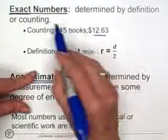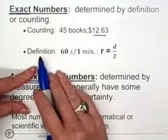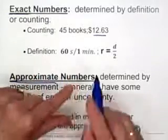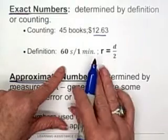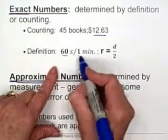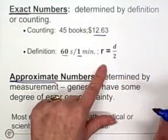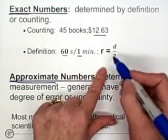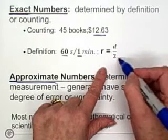Exact numbers are determined by either definition or counting. Definition means something like 60 seconds per minute. We know that there's exactly 60 seconds in one minute. So those numbers are exact. And certain definitions, such as the radius of a circle,